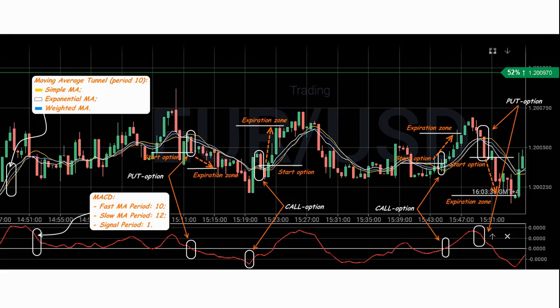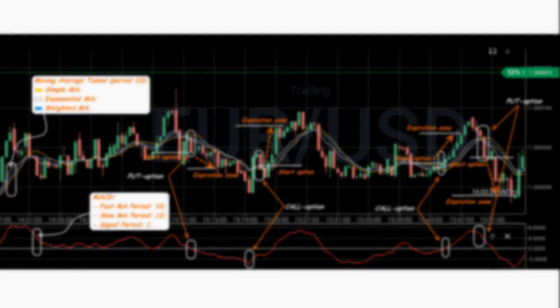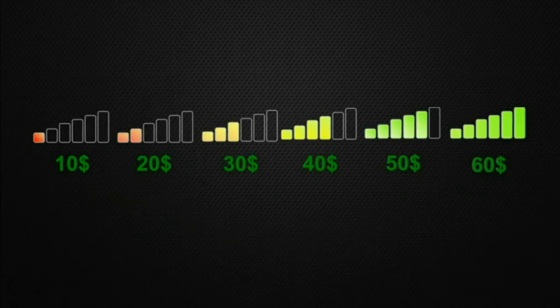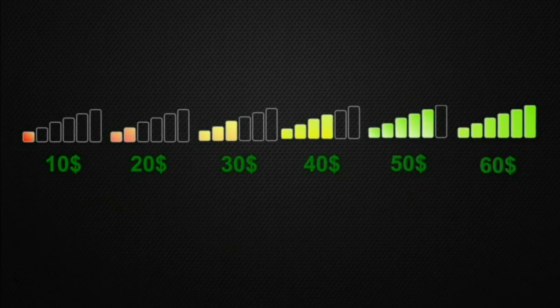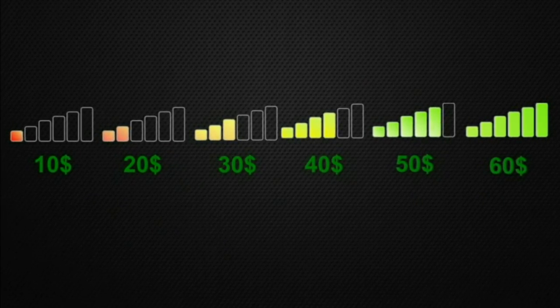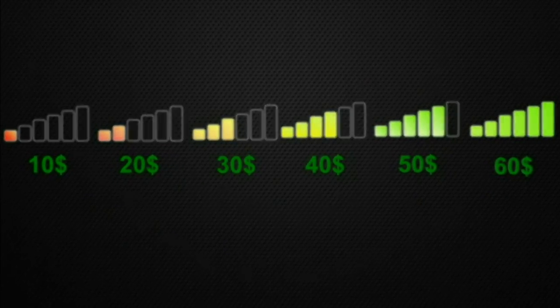Trade turbo options for two minutes on all currency pairs. Timeframe: 30 seconds. Several options can be opened, so the transaction amount will be fixed at $30. The option amount can also be determined depending on the strength of the signal using the adaptive strategy VFX alert.